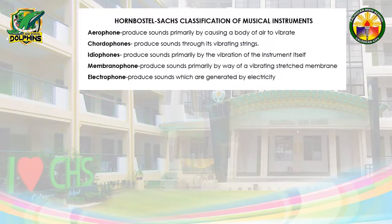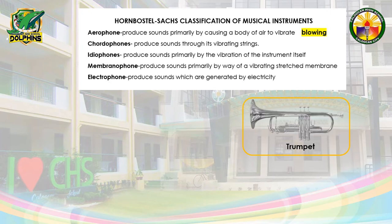Hornbostel-Sachs is a system of musical instruments classification devised by Erich Moritz von Hornbostel and Kurt Sachs. We have 5 musical instruments classifications in Hornbostel-Sachs. Number 1 is Aerophone, wherein musical instruments can produce sounds by means of blowing. An example is the trumpet.